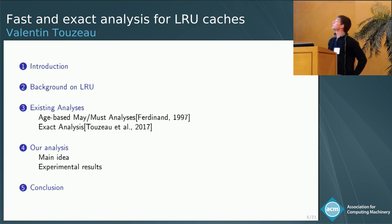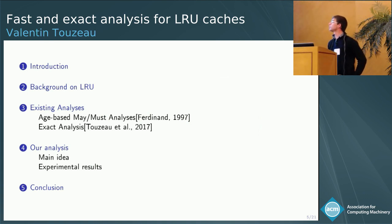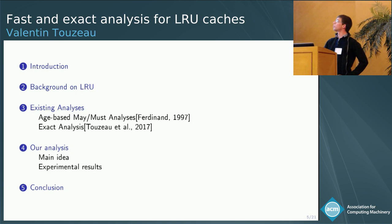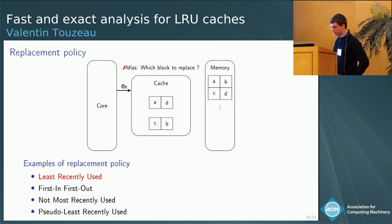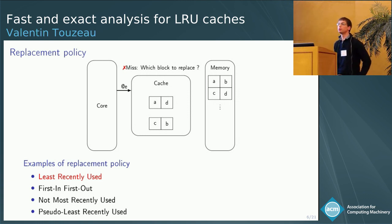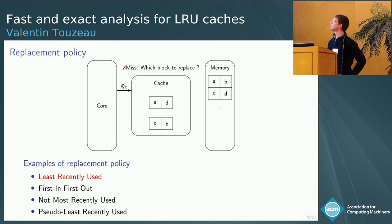I will first give some background about the least recently used policy and how it works, and then briefly mention two existing analyses of LRU caches, since our current work is based on them. The crucial question when analyzing a cache is: what happens when the cache is full and you need to store additional data? You have to choose a block to evict, and this choice is made by a replacement policy. We focus on the least recently used policy because it is one of the easiest to analyze.